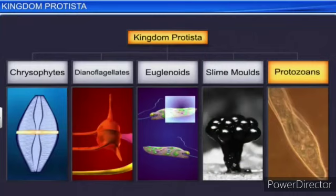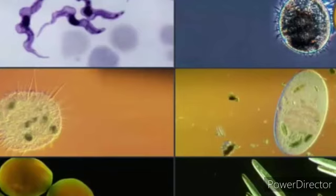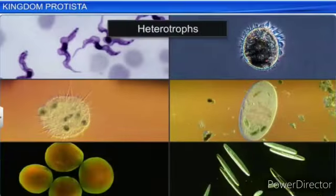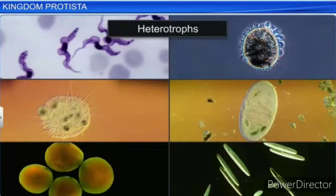The last classification is Protozoans. 'Proto' means first, 'zoa' means animals — first animals. All protozoans are heterotrophs; they depend on other organisms for food. They live as predators or parasites, depending completely on other living organisms for food. They are believed to be primitive relatives of the animals.